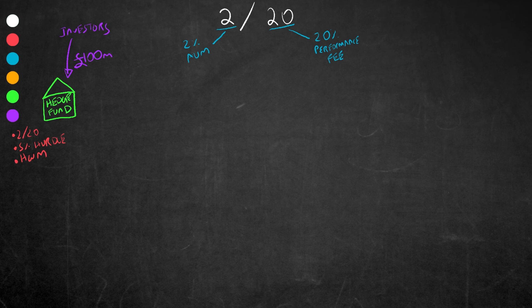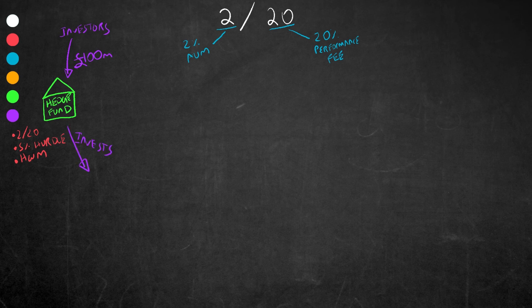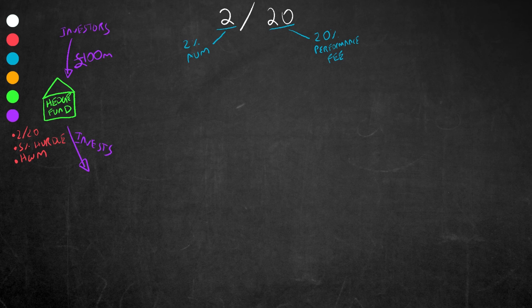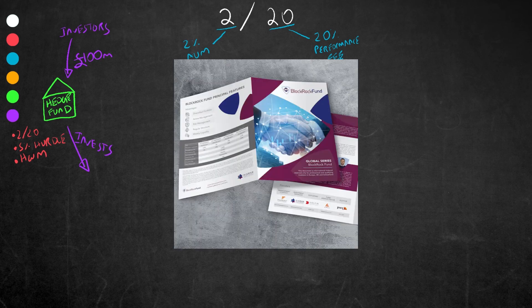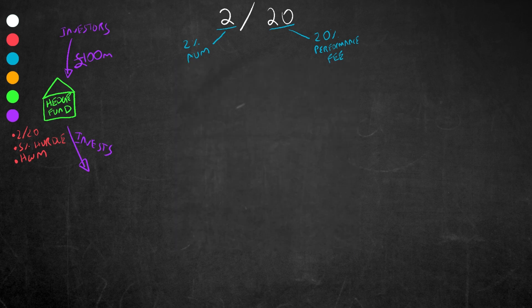The fund takes that money in and finds a bunch of financial products to invest that money into, be it equities, bonds, derivatives. Their investment focus or theme will be stated in their memorandum or brochure. So let's now go through a three-year example on the growth of this fund.